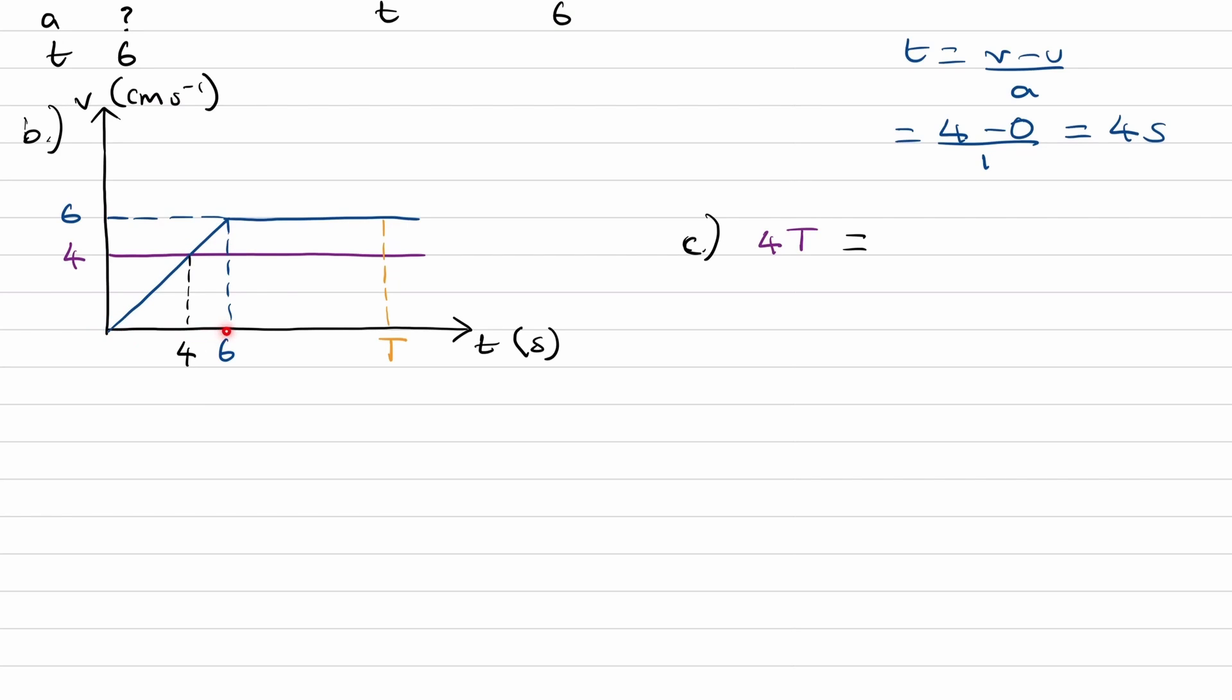And then we have the rectangle as well on top of that. So the rectangle has a height of six and it has a base of T minus six. So this will be six times T minus six.